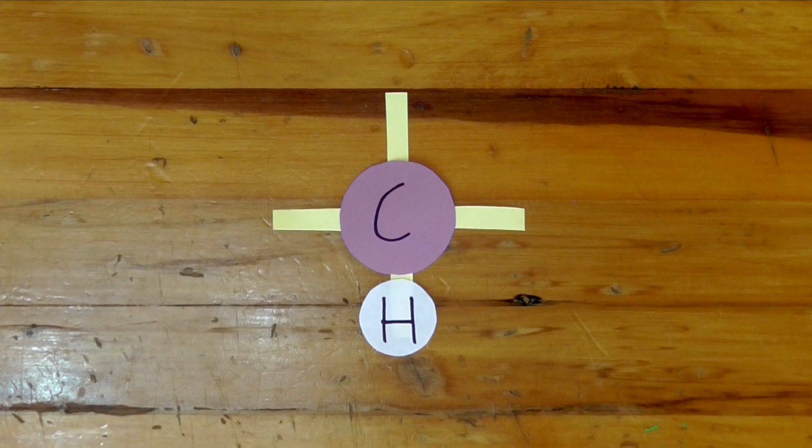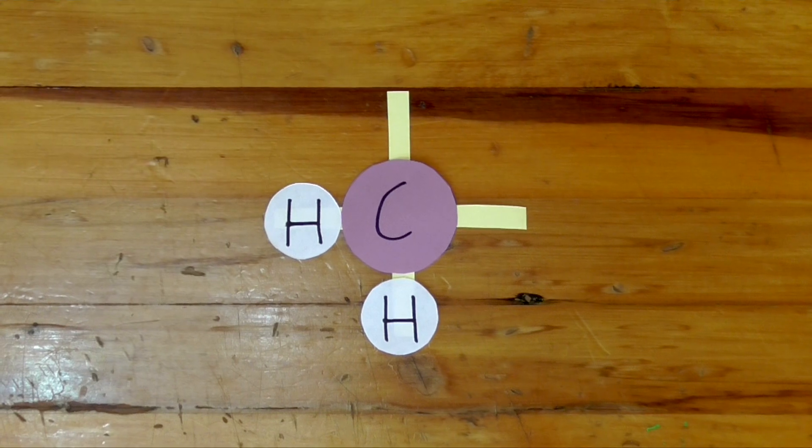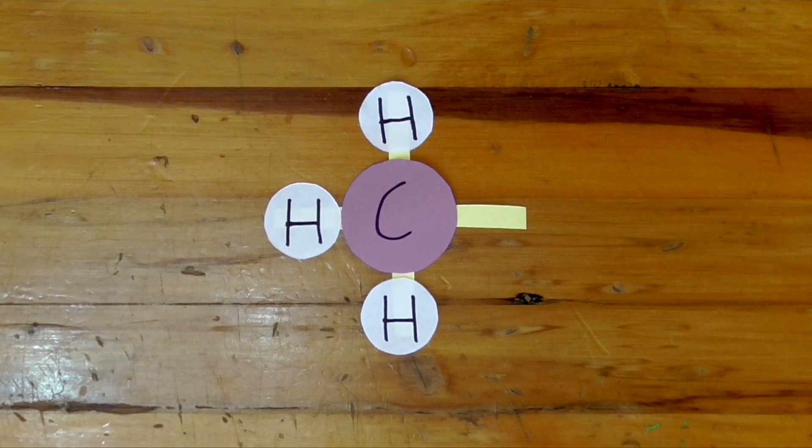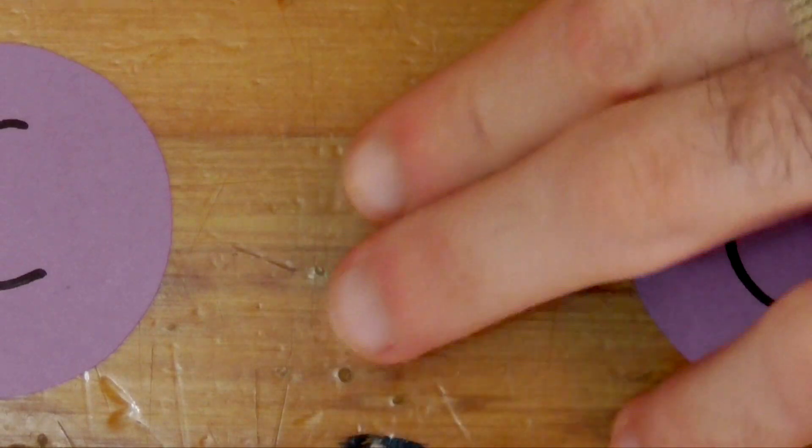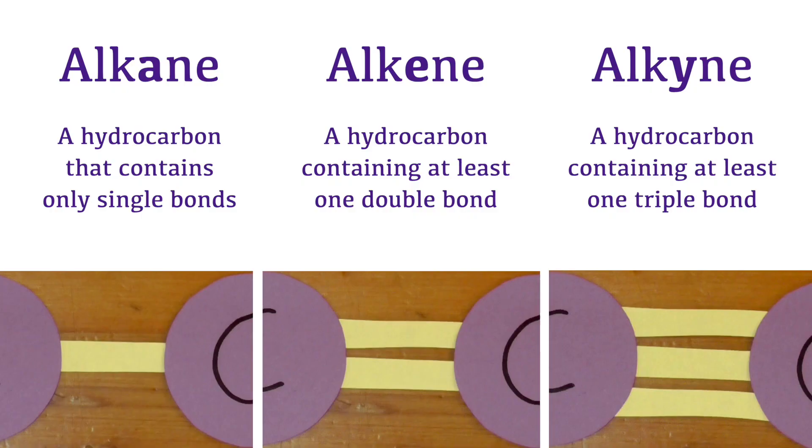In summary, hydrocarbons are organic compounds containing only hydrogen and carbon, and they are often used as fuels. Depending on the type of covalent bonding that defines them, they may be classified as alkanes, alkenes, or alkynes. I will create more detailed videos about these in the future, but for now, let's move on.